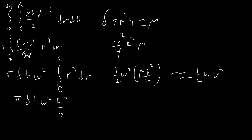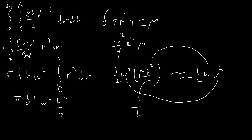We can reorganize this as one half * omega² * (m R² / 2). This is very similar to one half m v squared — omega plays the role of velocity, and instead of m we have m R² / 2. This quantity is called I, the moment of inertia of the rotating object. So the general formula for rotational kinetic energy is one half * omega² * I, which is very similar to one half m v squared. I is calculated by integrating r² dm over the entire mass distribution.